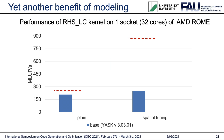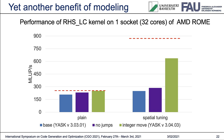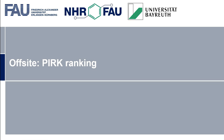Returning to the question from the beginning — is my code performing optimally on a given hardware? We see that in this particular case, there is room for optimization since the model and the measurements deviate significantly. A closer inspection of the assembly code revealed unnecessary jumps and integer moves in the innermost loop, costing performance, which was then fixed in a later version of YASK. In most other cases, YASK did a very good job generating highly efficient code that came within 10% of the model.